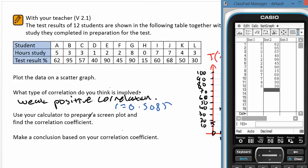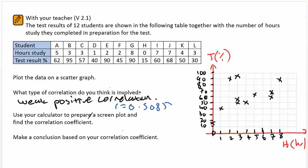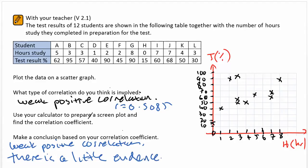Now when we draw a conclusion based on the correlation coefficient, we note the weak positive correlation. There's a little evidence to show that the greater the hours of study, the better the test result. So as the hours of study increase, so does the test result.